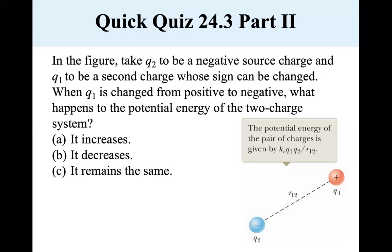Now, in the figure, the same figure, when q₁ is changed from positive to negative, what happens to the potential energy of the two charge system? Well, it increases because kₑ q₁ q₂ over r, that's a negative value because q₂ is negative and q₁ is positive. Now, if we make q₁ negative, you have a negative times a negative. That's positive. So it becomes positive. The value becomes positive. So it increases.